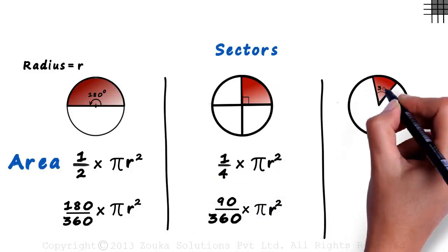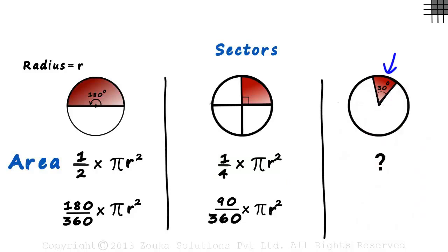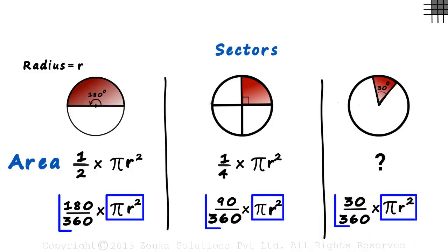So if this angle is 30 degrees, then the area of the sector will be 30 by 360 multiplied by pi r squared. This part is the area of the circle and this part tells us how much of the circle is covered.